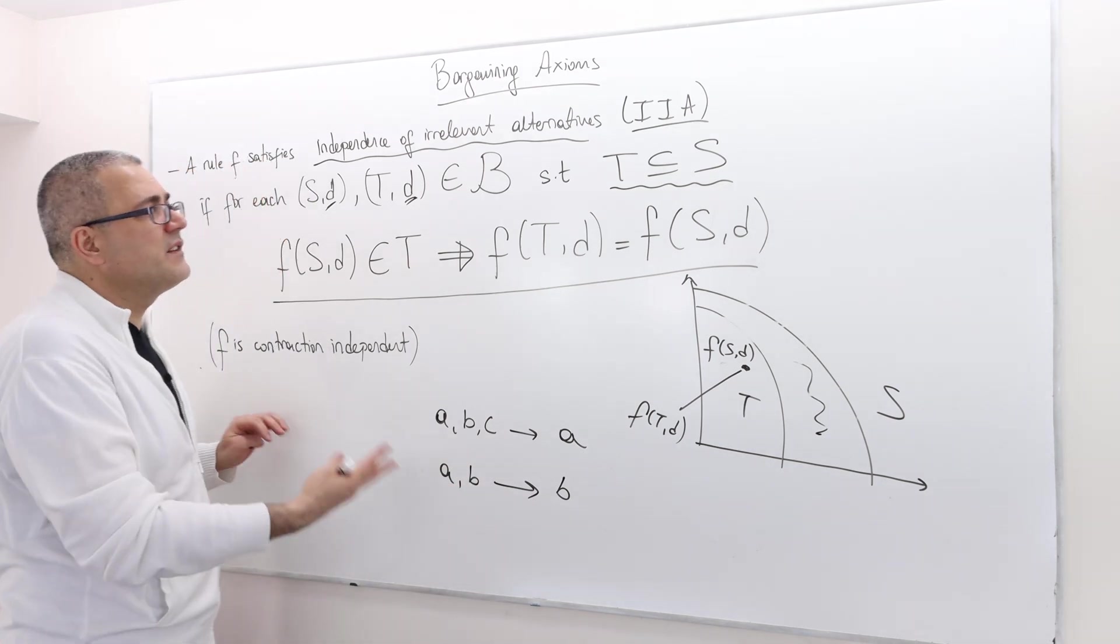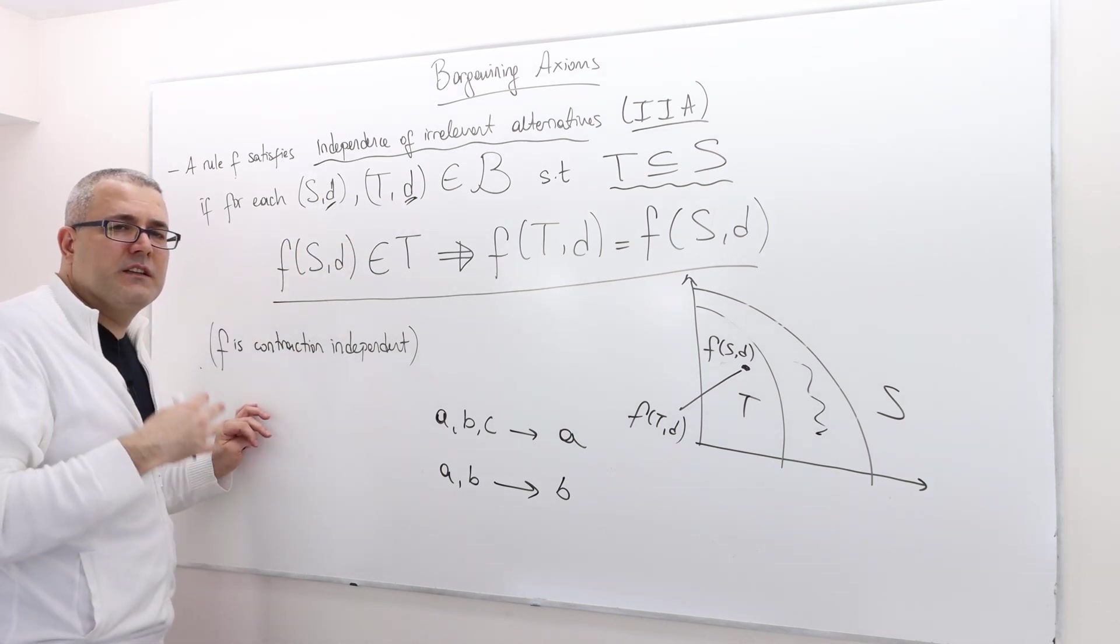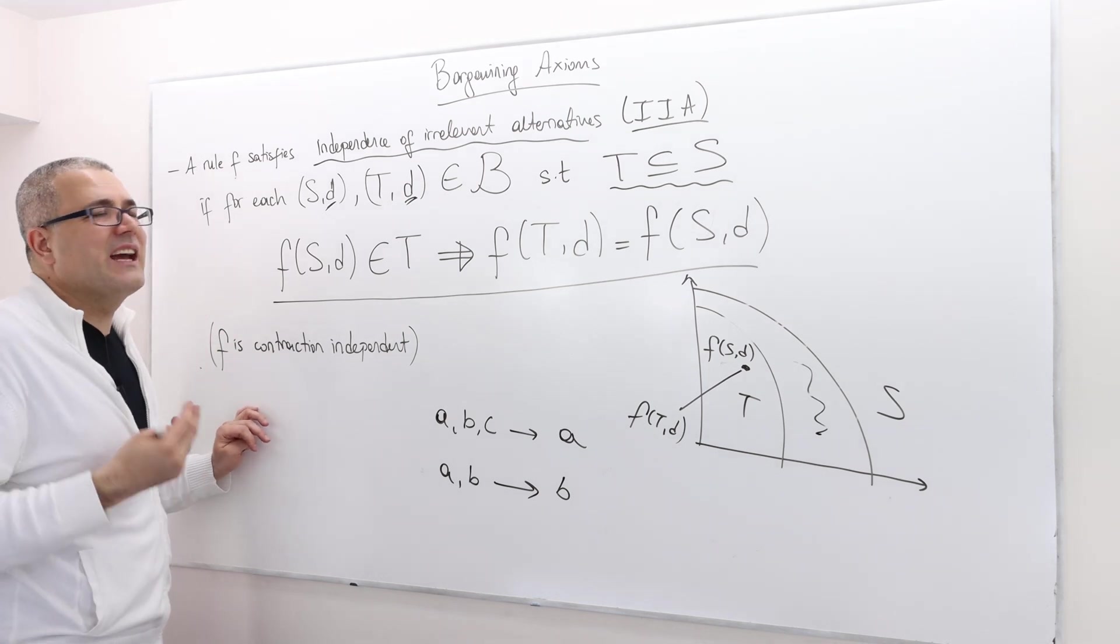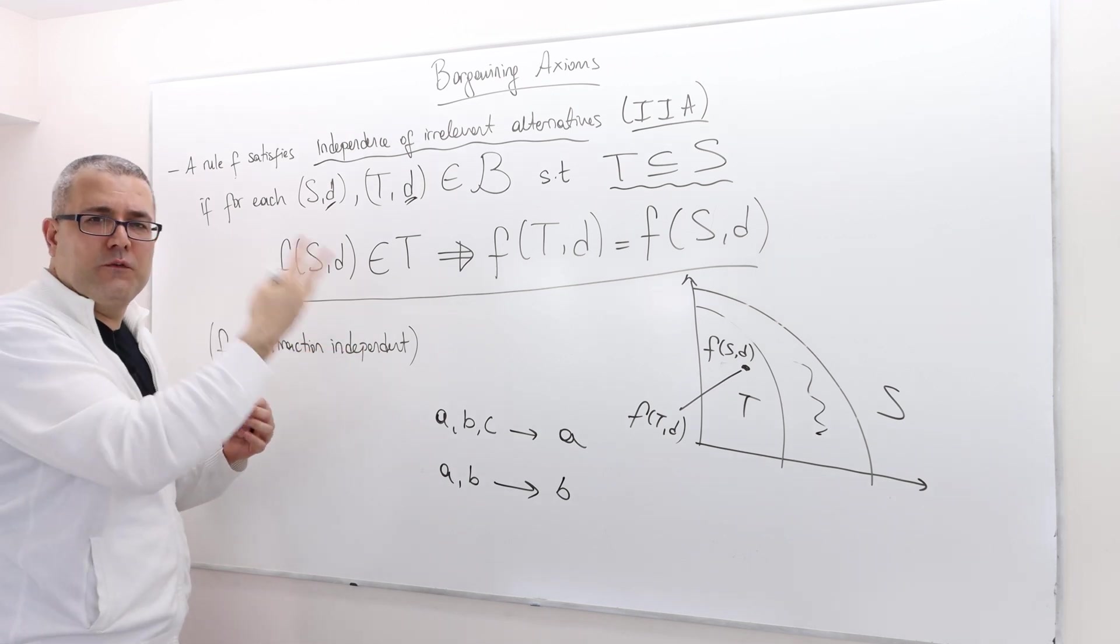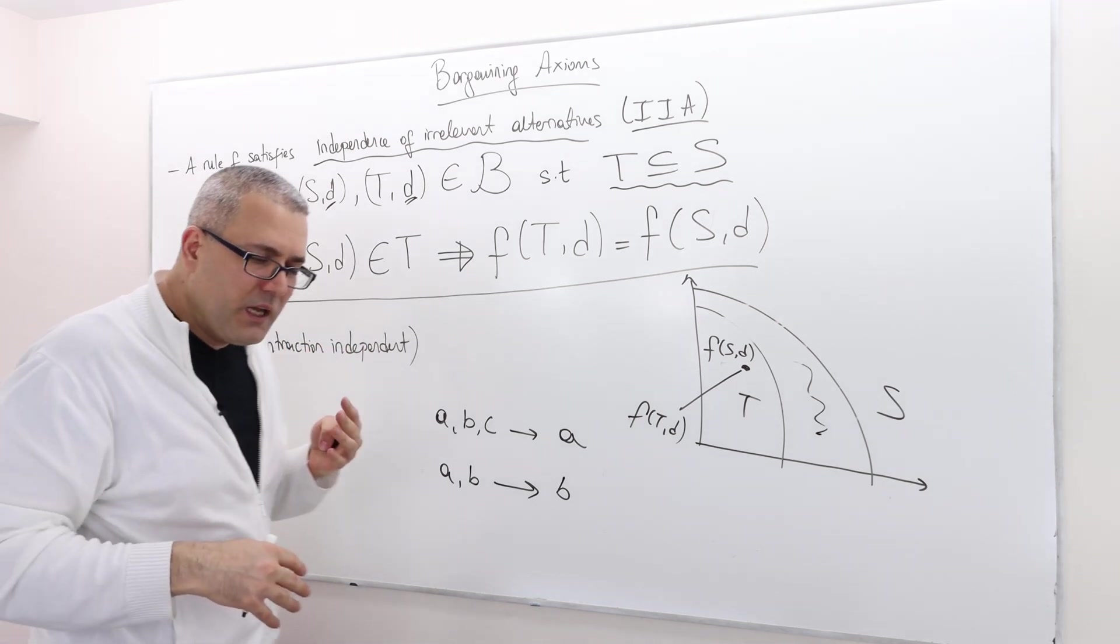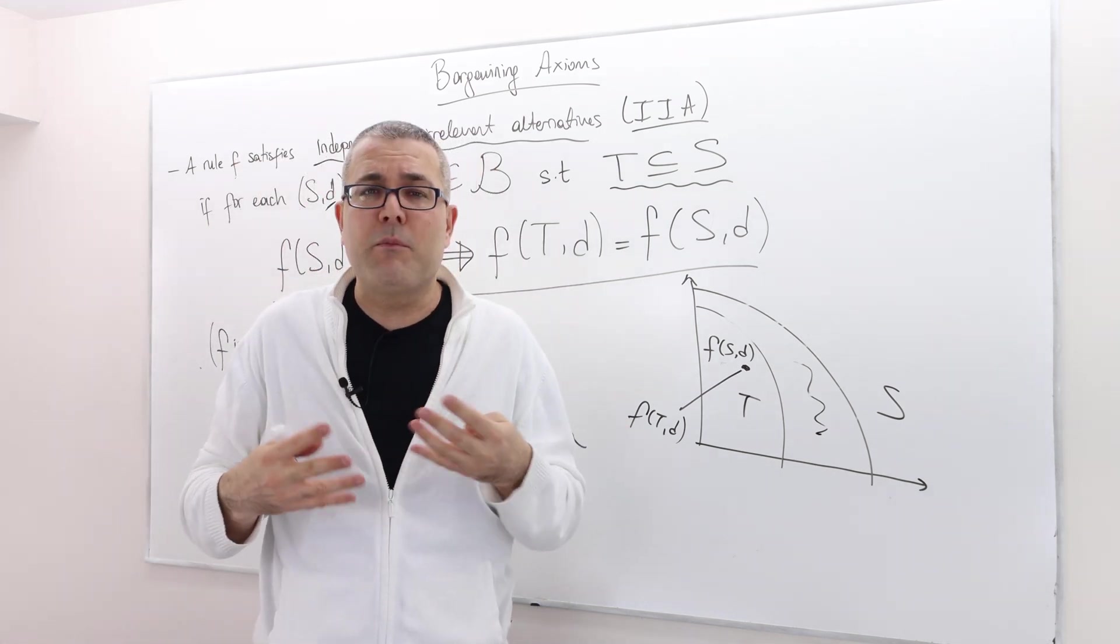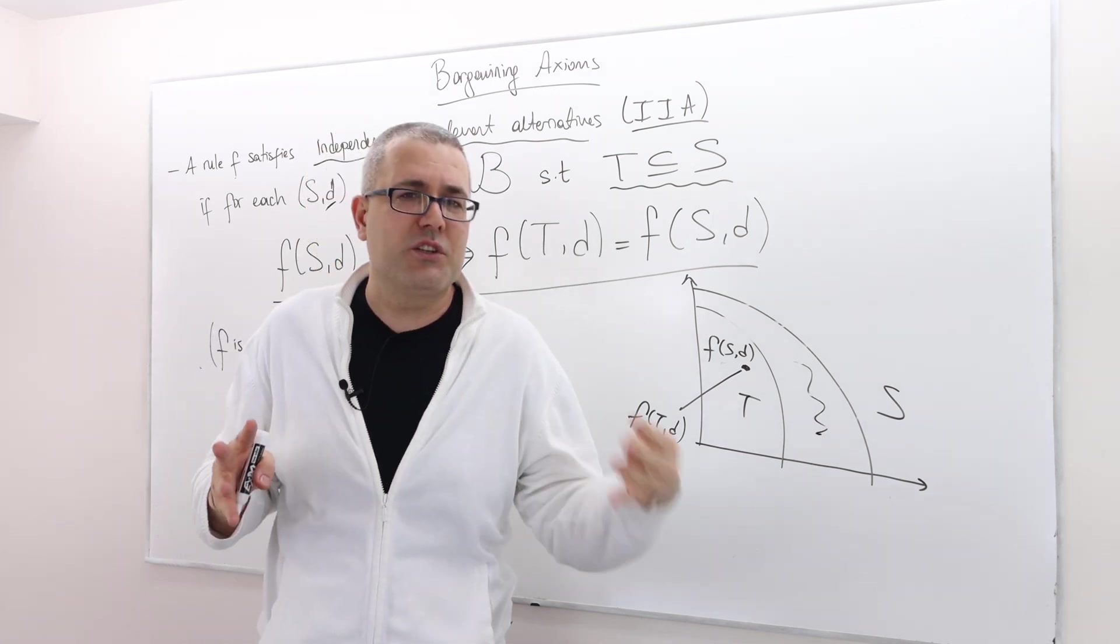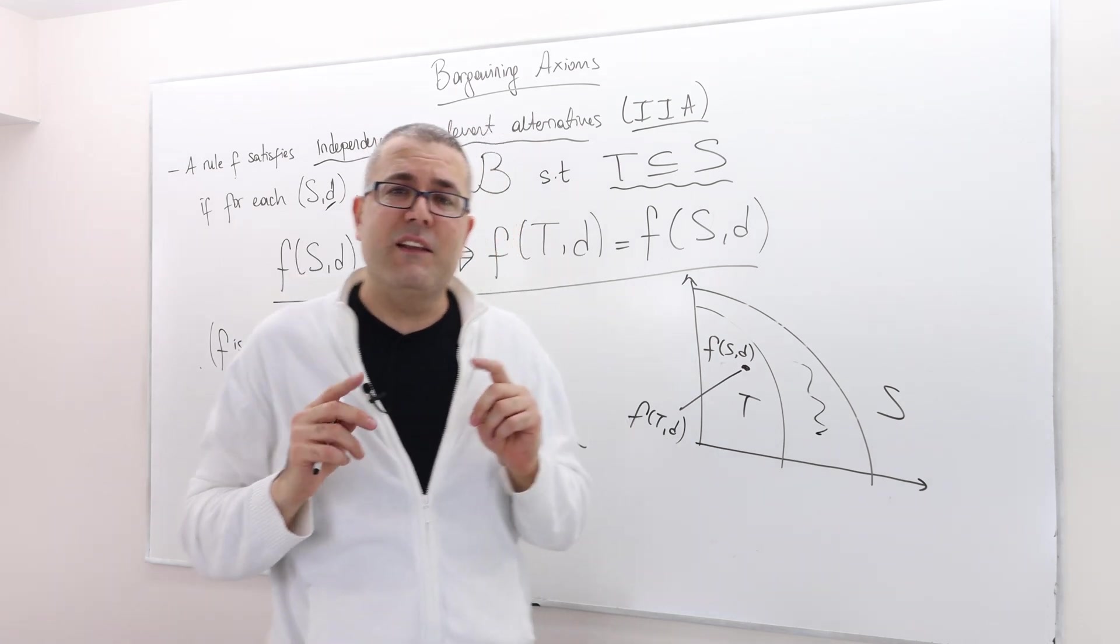So in that sense, the irrelevant alternatives should not affect the choice of the bargaining rule. That's the idea—here it's not choice, obviously. It's the choice of the rule. But here's what this rule should satisfy. We are trying to rationalize this rule in a sense. Remember, we were rationalizing the choice behavior. Here, we're trying to rationalize the choice behavior of the bargaining rule.